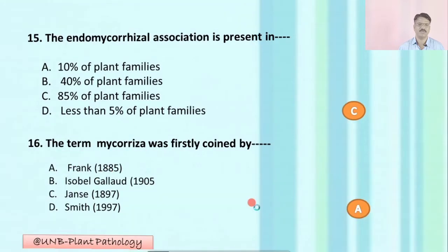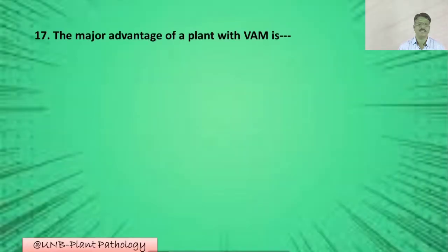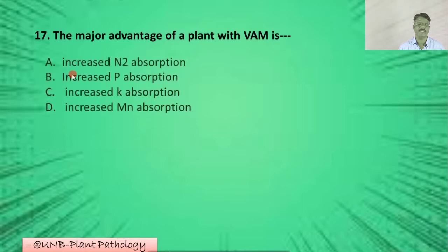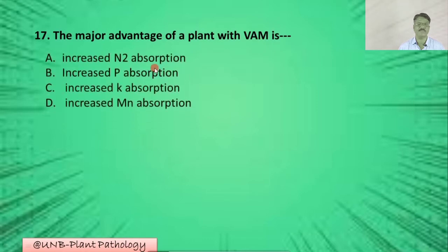Question number seventeen: The major advantage of a plant with VAM is — A: increased N₂ absorption; B: increased phosphorus absorption; C: increased potassium absorption; D: increased magnesium absorption. The correct option is B: increased phosphorus absorption.